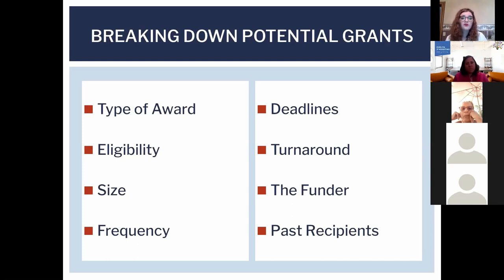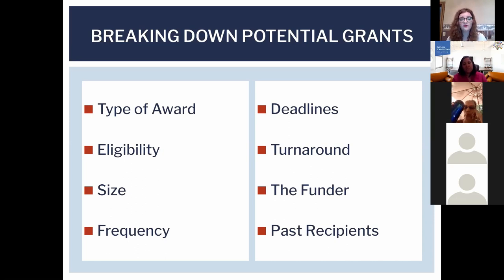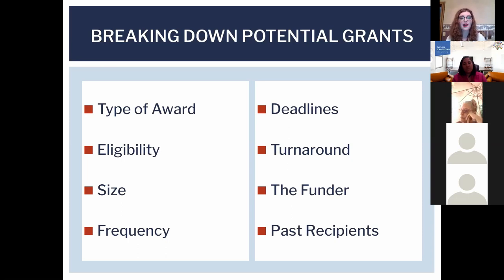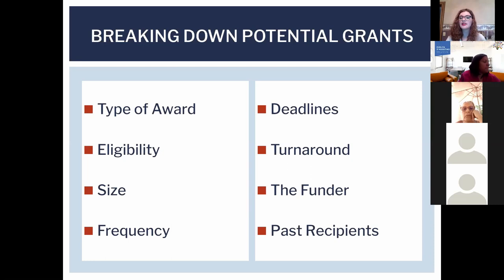Look into who your funder is. There are cases where artists see a grant giving out money, apply, and the program falls through because the source isn't reputable. I always encourage you to research the organization you're applying to. Lastly, look at past recipients — are they people that align with your vision? Are they receiving money for projects in a similar vein that you can use to compare and develop yours?